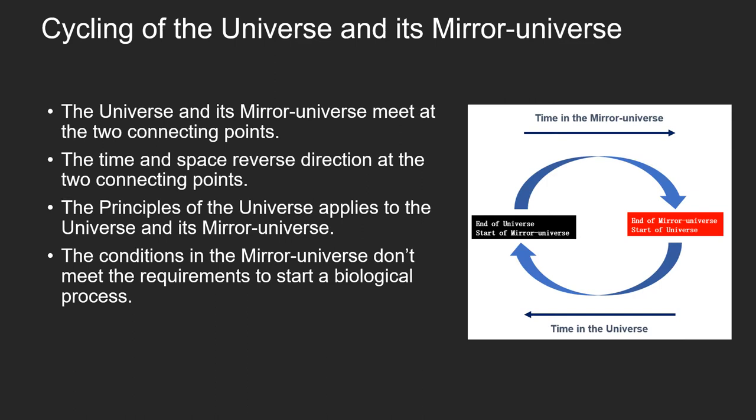The cycling model of the universe and its mirror universe is itself simple. The universe starts at the right, moves to the left, and ends at the left. The mirror universe then starts at the left, moves to the right, and ends at the right, whereupon the universe starts again — forming a cycling. The universe and its mirror universe meet at the two connecting points, where time and space reverse their directions. The principles of the universe apply to both the universe and its mirror universe.